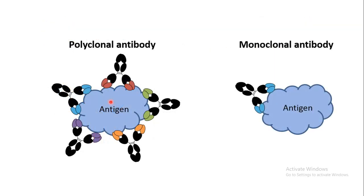Antibodies can be broadly classified depending upon what type of antigen they recognize. Antibodies may not recognize the whole antigen — they might recognize a part of the antigen known as the epitope. If an antibody recognizes only one particular type of epitope, it is known as a monoclonal antibody. If the same antibody recognizes multiple different epitopes of the same antigen, it is known as a polyclonal antibody.